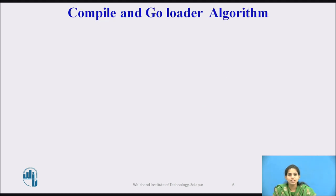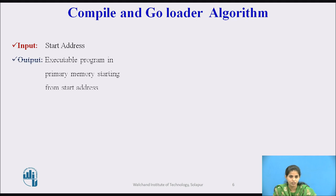Now next we see the compile and go loader algorithm. The input to the compile and go loader is the starting address of the instruction, and the output is the executable program in the primary memory.